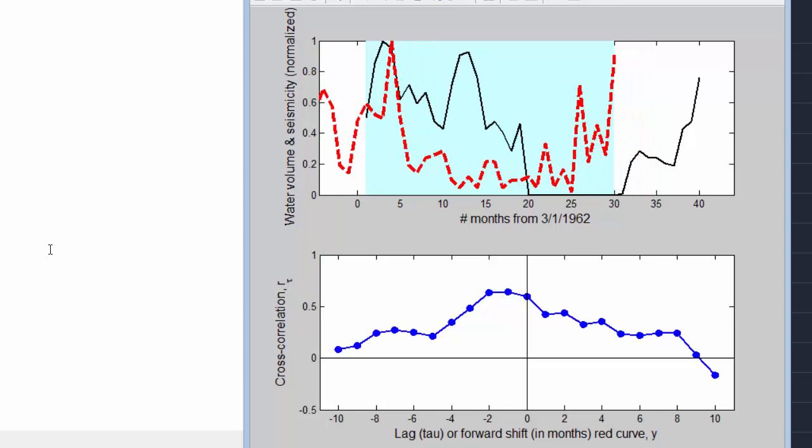So looking at the behavior of this cross correlation function it looks like the peak correlation occurred about one to two months in shift. Meaning that I had to shift the seismicity curve back in time by one to two months indicating that there appears to be a significant lag in the response of seismicity to pumping. And that lag is one to two months or so.